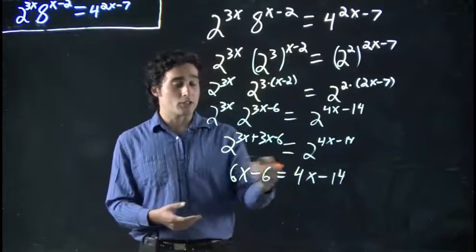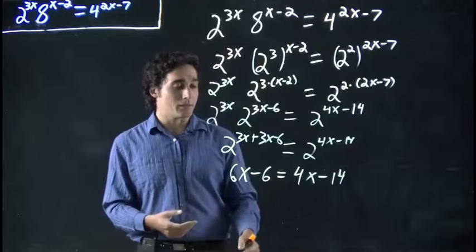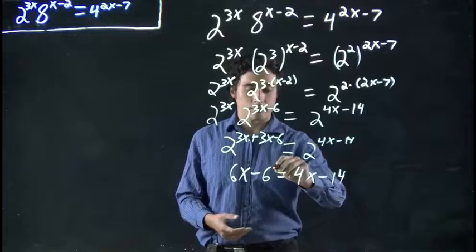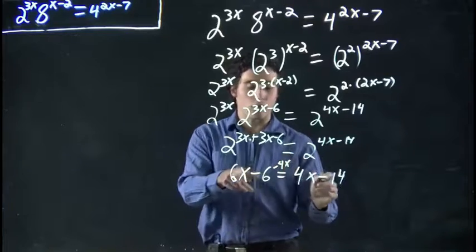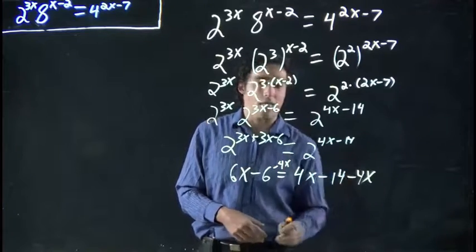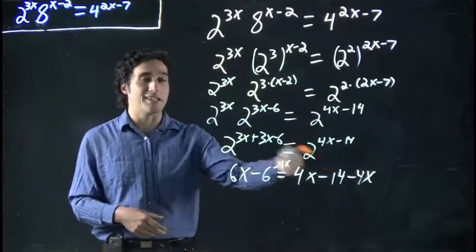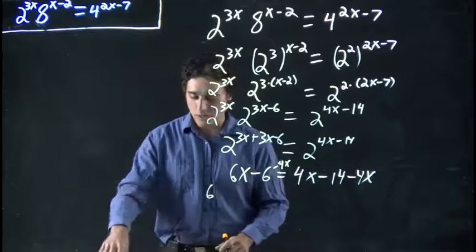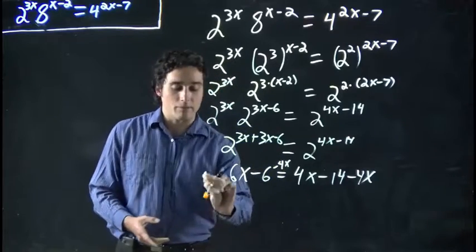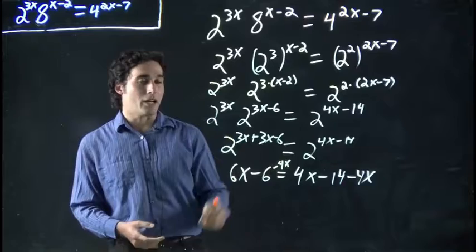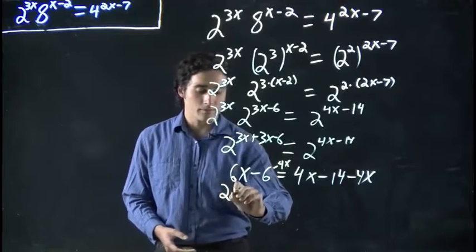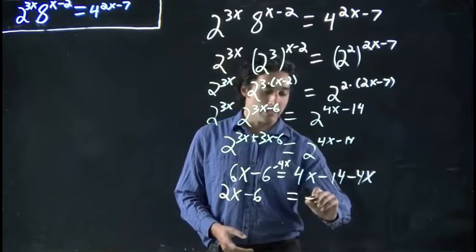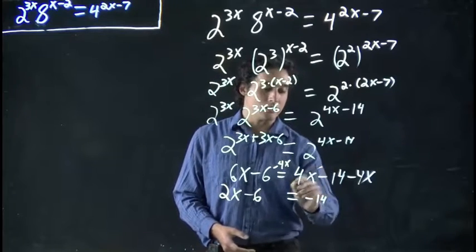Great. Now we're just solving for x like we've done many times. So what I'm going to do is subtract 4x from both sides to get the x's over here. As always, that's an arbitrary choice. I'm choosing to bring the x's to the left side. We have 6x minus 4x, which is 2x. Then we have minus 6. And that's equal to our minus 14 on this side, because these two have cancelled.